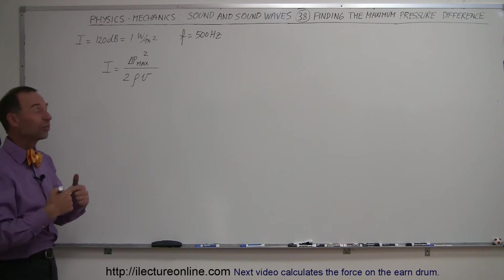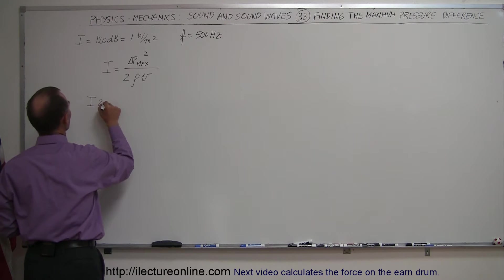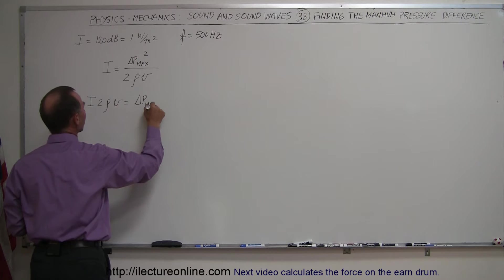So we're going to rearrange that equation. We're going to multiply both sides by 2ρV, so we have I times 2ρV equals the maximum pressure difference squared.